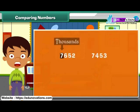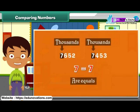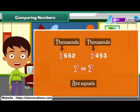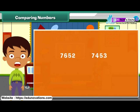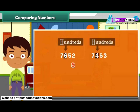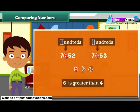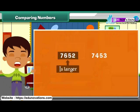However, if the digits at the thousands place in the two numbers are the same, we compare the digits at the hundreds place. The number that has a greater digit at the hundreds place is the larger of the two. For example, let us compare 7,652 and 7,453. Since the digit 7 at the thousands place is the same in both numbers, we compare 6 and 4. Since 6 is greater than 4, we can say that 7,652 is larger.